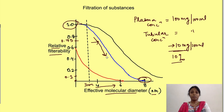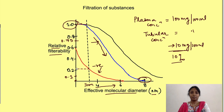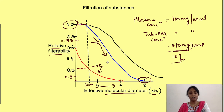For negatively charged (anionic) substances, filterability is much less than for neutral substances of the same size. This is because the negatively charged membrane repels the anionic substance, decreasing its filtration. So the maximum size of an anionic substance that gets filtered is only 6 nanometers.